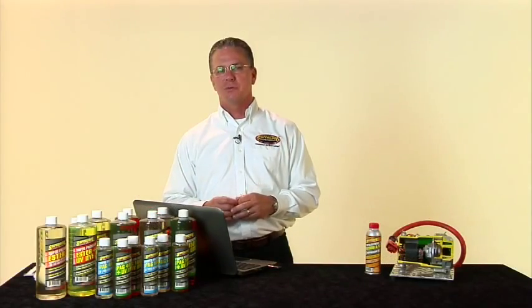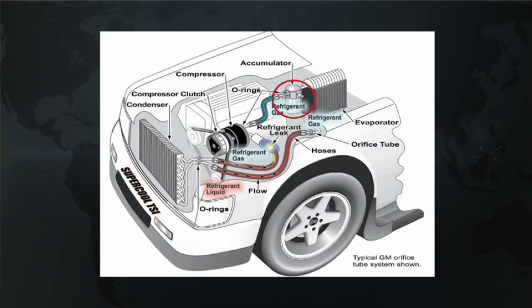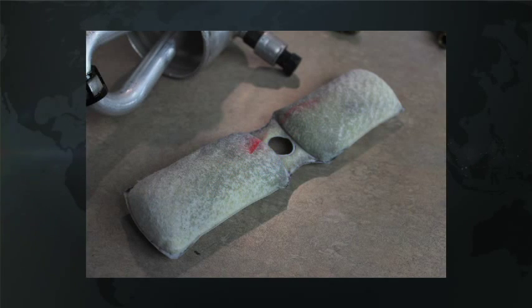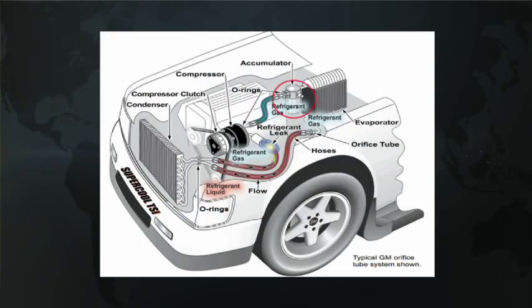Let's talk about the accumulator, also referred to as the receiver dryer. As the refrigerant and the lubricant flow from the evaporator back toward the compressor, they pass through the receiver dryer. Its primary function is to remove any moisture in that system. There are desiccant crystals inside the receiver dryer that absorb any moisture as it passes through — it's kind of like a sponge on your sink at home. Once that sponge is full of water, it's not going to pick up any more. So anytime you're changing a compressor, you always want to change your receiver dryer.